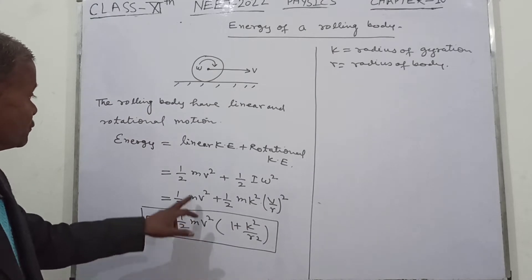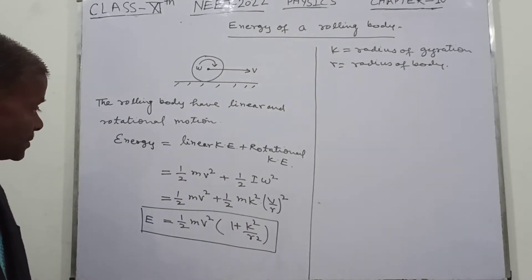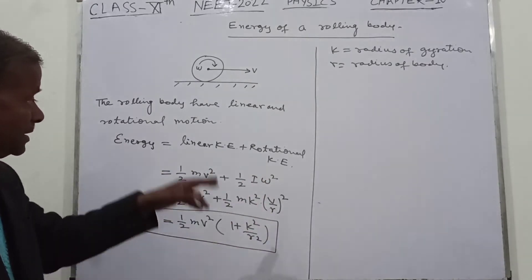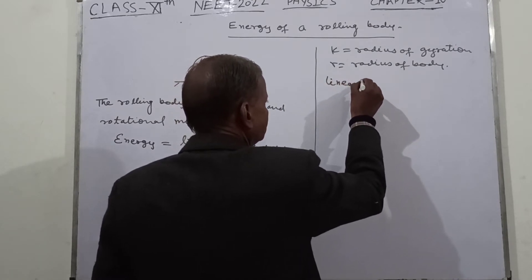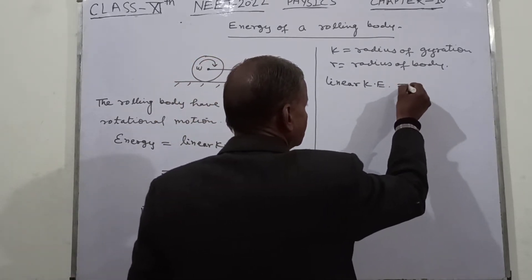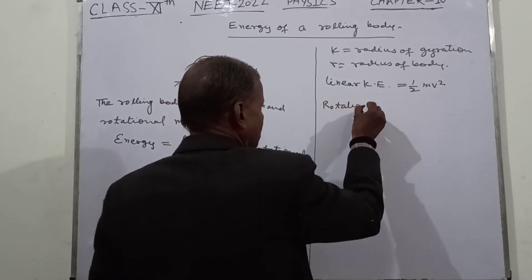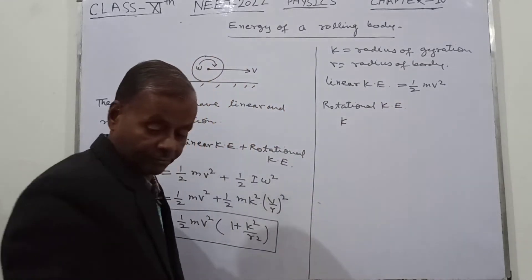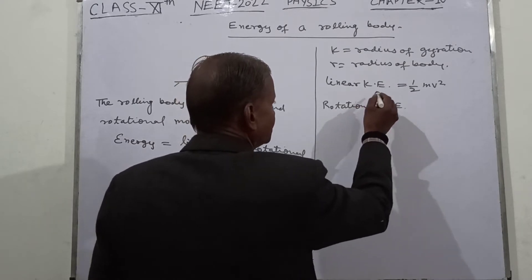In this expression, one-half mv² is the linear kinetic energy. If we want to find the ratio of total energy E to linear kinetic energy, we note that linear kinetic energy is denoted by E_T (translational kinetic energy), which equals one-half mv². Rotational kinetic energy is denoted by E_R.